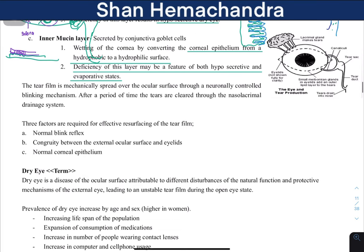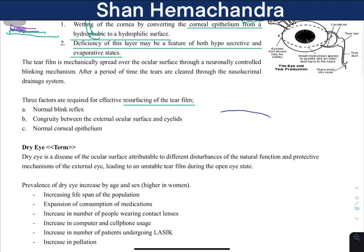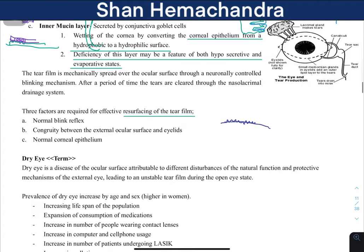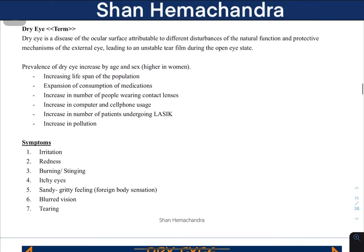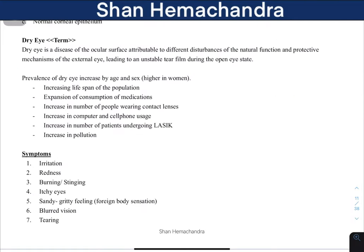Three factors are needed for effective resurfacing of the tear film. First, a normal blink surface. Second, congruity between the external ocular surface and the eyelids — meaning there should be a continuous flow of tears across the external ocular surface. Third, the corneal epithelium must be normal. If any of these structures are absent, or if the surface is hydrophobic due to low mucin, it can cause defective tear spreading and dry eye.